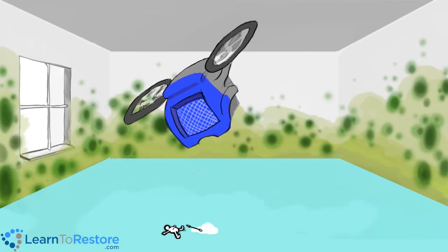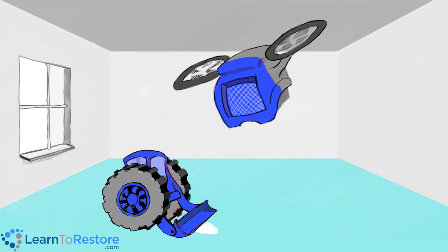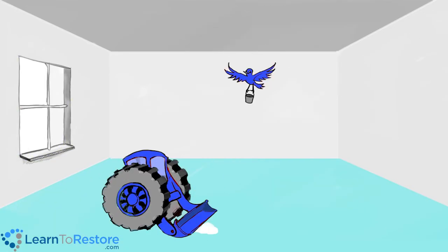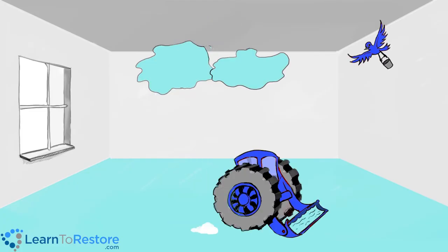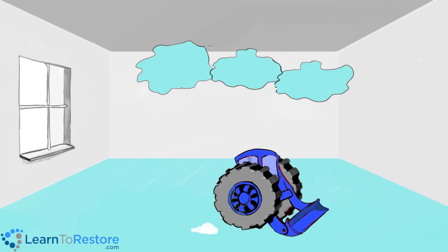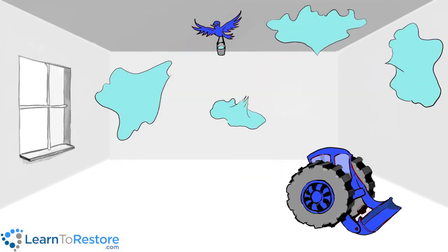If there is plenty of airflow and evaporation, but not enough dehumidification, the excessive moisture not being removed from the air will soak into books, paintings, walls, and other hygroscopic materials, causing secondary damage. Another win for water damage.